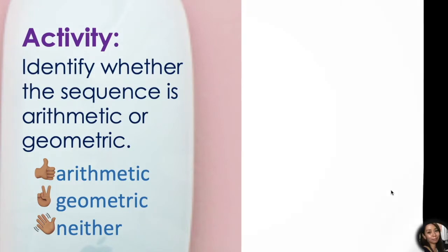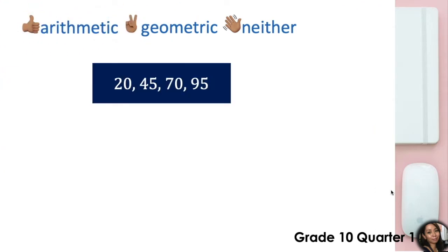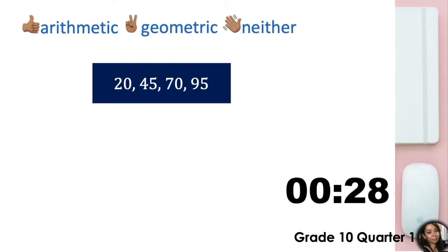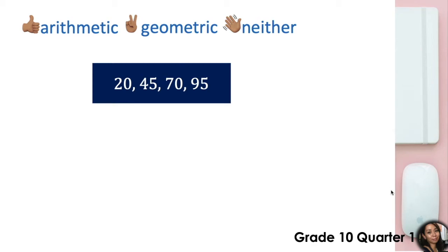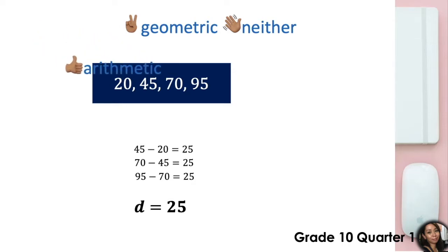Let's start with the first one: the sequence 20, 45, 70, 95. Is it arithmetic, geometric, or neither? Since we have a common difference equal to 25, then this sequence is an arithmetic sequence.